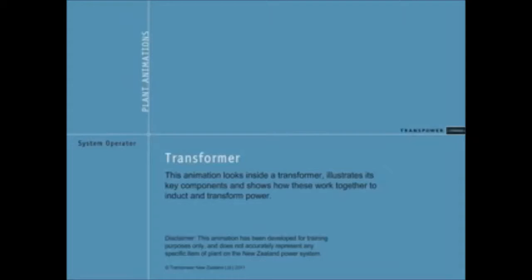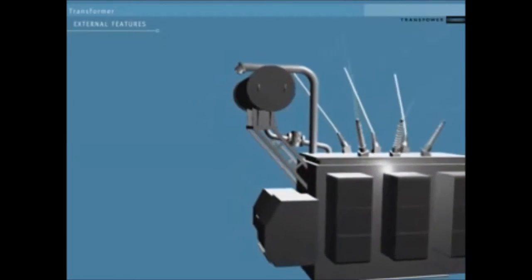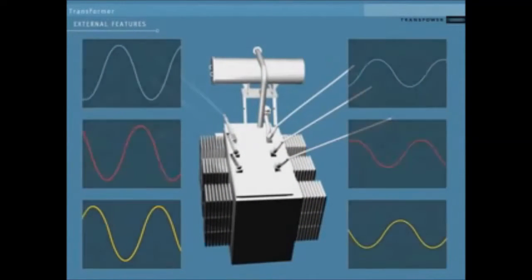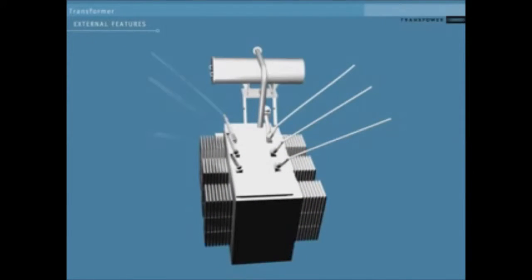In this animation, we'll look at how a transformer works. This is a typical oil-cooled step-down transformer. Transformers step voltages up or down. Electricity comes in on one side at one voltage and goes out on the other at a different voltage.